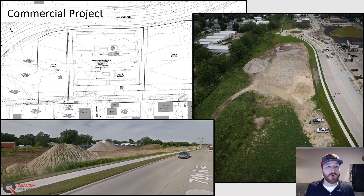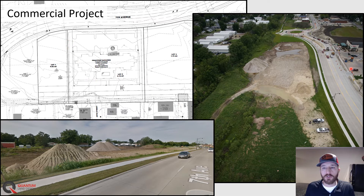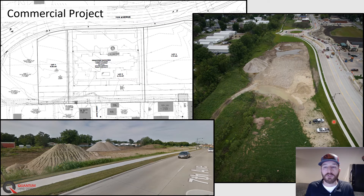Let's take a look at our first topo — this one's a commercial project. If we take a look at the plan set here, you'll notice it has nice straight contour lines that clearly do not match what is actually there. There was recently some demo work done on this project site. We also have two stockpiles: one of gravel that we can use on the project and another one of fines we can use for fill, that we need to calculate too. So this is a good candidate for a topo to compare versus the final plans and figure out how much earth we have to move and what we should charge for that.